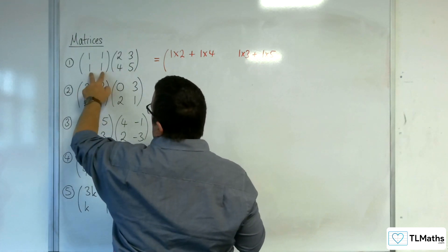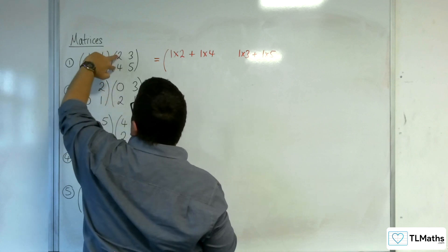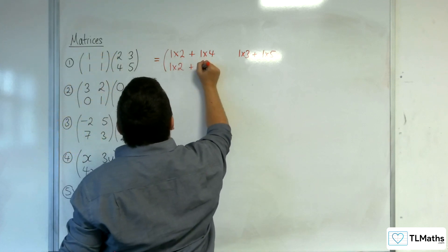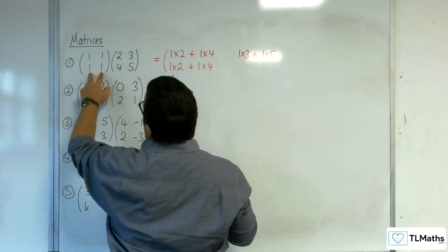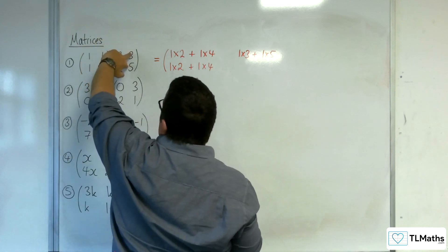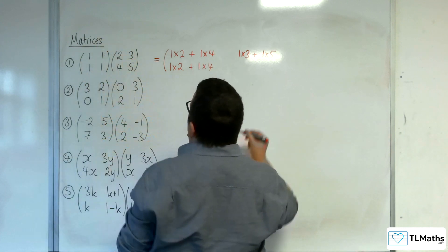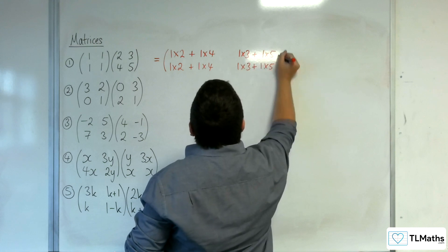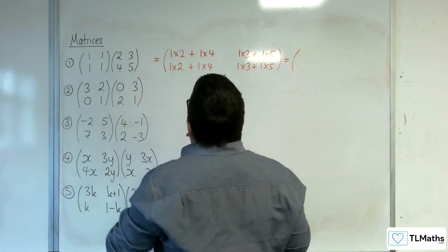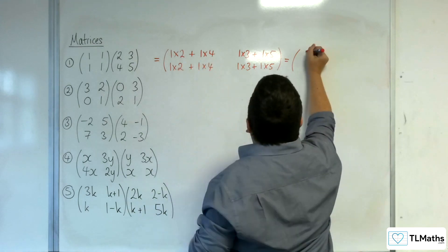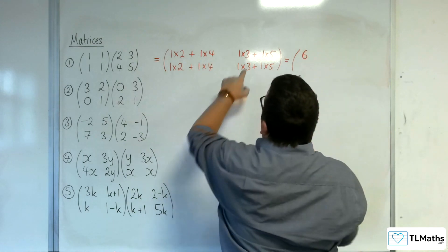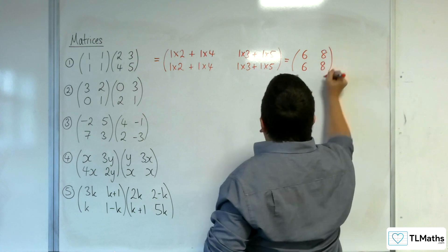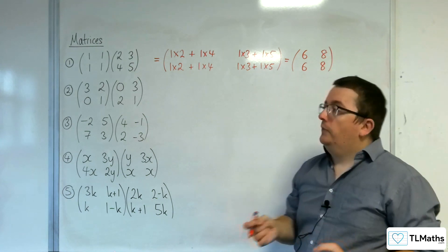Now for the bottom row, you've got the 1, 1 multiplying with the 2, 4 — so 1 times 2 plus 1 times 4, again. And then the bottom row multiplying with the second column: 1 times 3 plus 1 times 5. So we've got 2 plus 4, so 6; 3 plus 5, so 8; giving 6, 8. And so that is my answer.